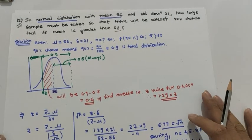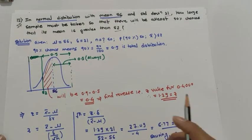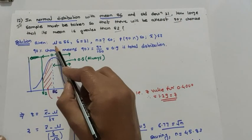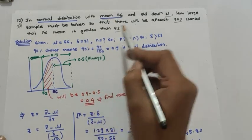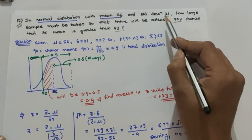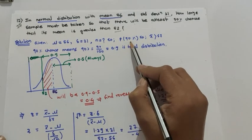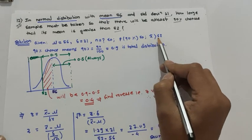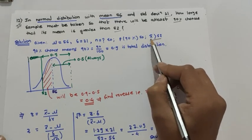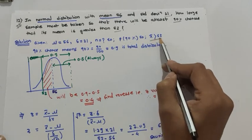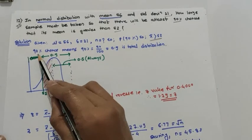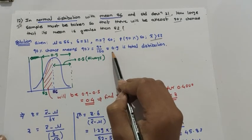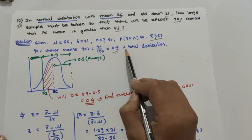This is a reverse example which we studied in the previous videos. Here, probability is given and we have to find the sample size. Mu is given as 56, delta is given as 21. For what n, with probability of 90 percent, the sample mean should be greater than 52?